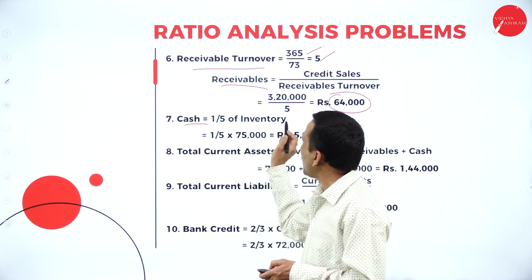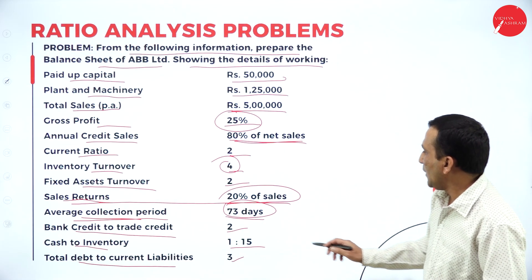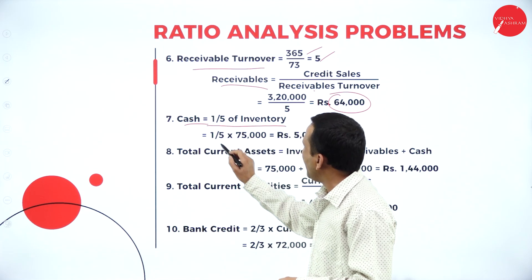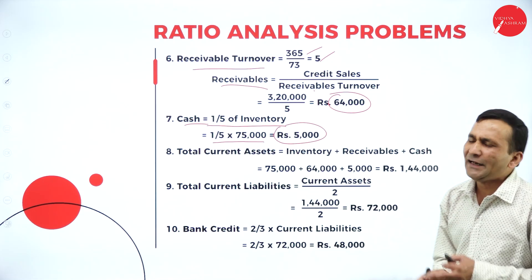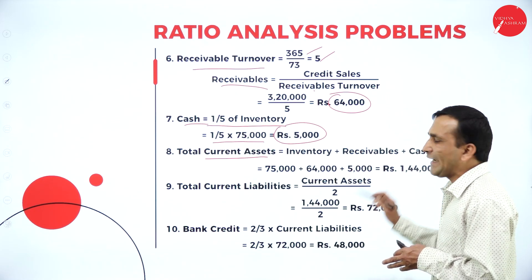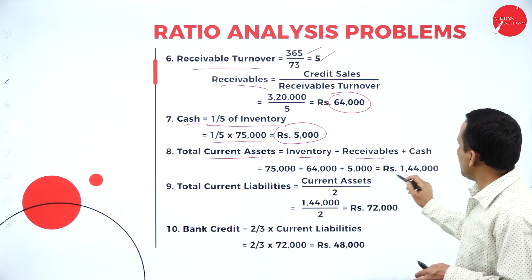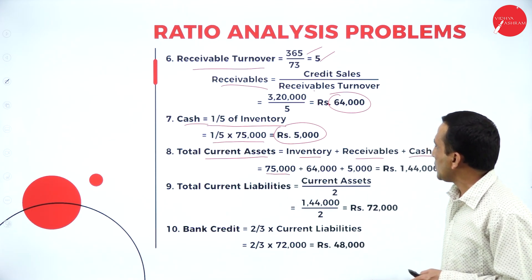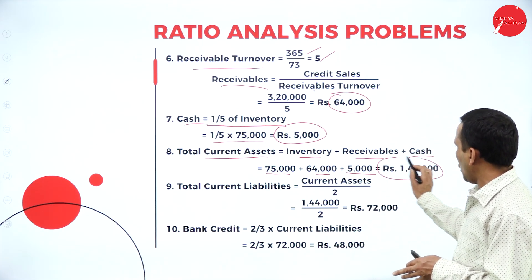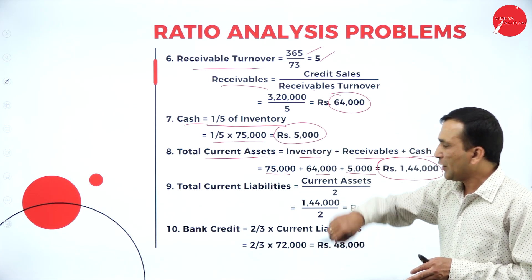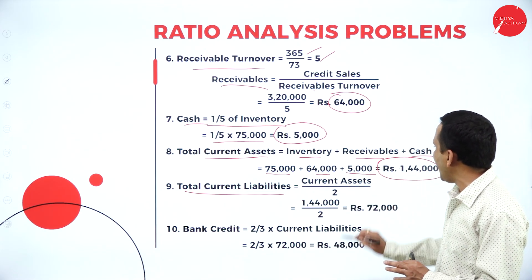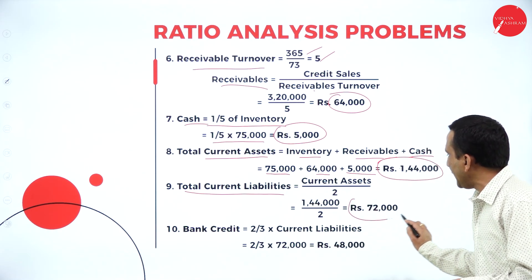Cash is one-fifth of inventory. Inventory is 75,000, so 75,000 into 1/5 gives cash of 15,000. Total current assets: inventory plus receivables plus cash — 75,000 plus 64,000 plus 15,000 gives total current assets of 1,44,000. Current liability is current assets divided by current ratio 2: 1,44,000 divided by 2 gives current liability of 72,000.